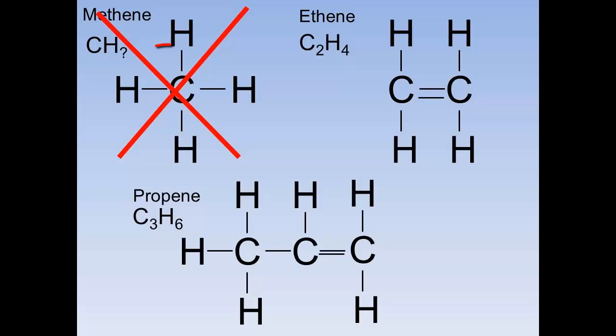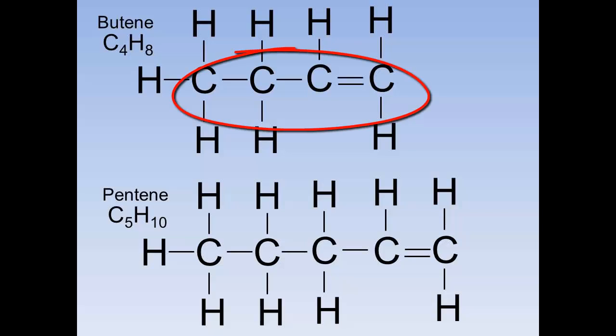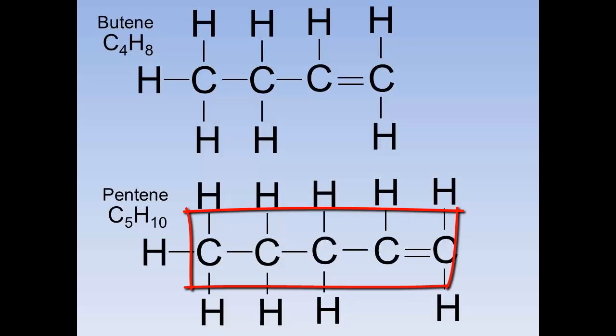Let's have a closer look at the homologous series of alkenes. Well, first of all, there is no methene. You have to have at least one carbon-carbon double bond. Therefore, you must start with two carbons. So we've got C2H4, which is ethene. Add another CH2. And we've now got propene. We can see that we've got butene and pentene with five carbon atoms.